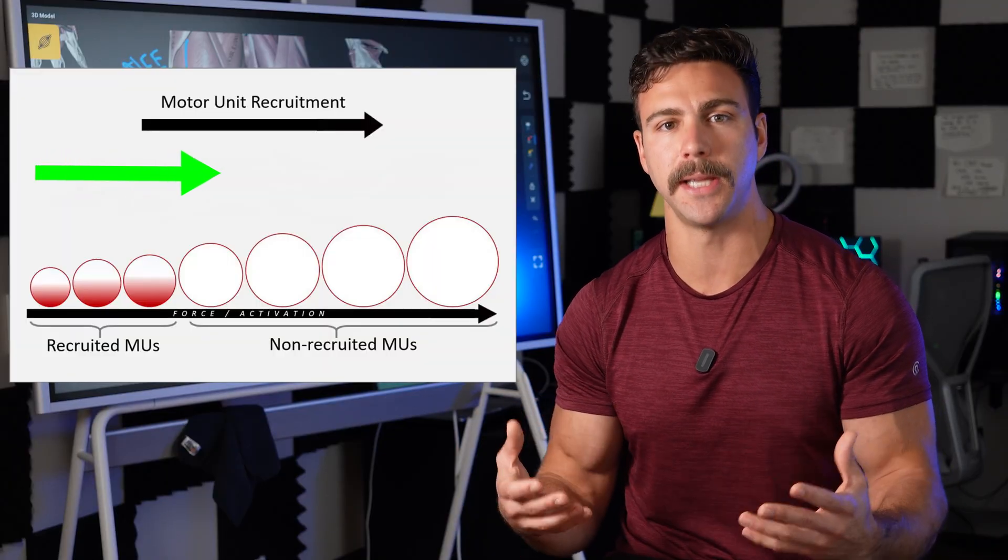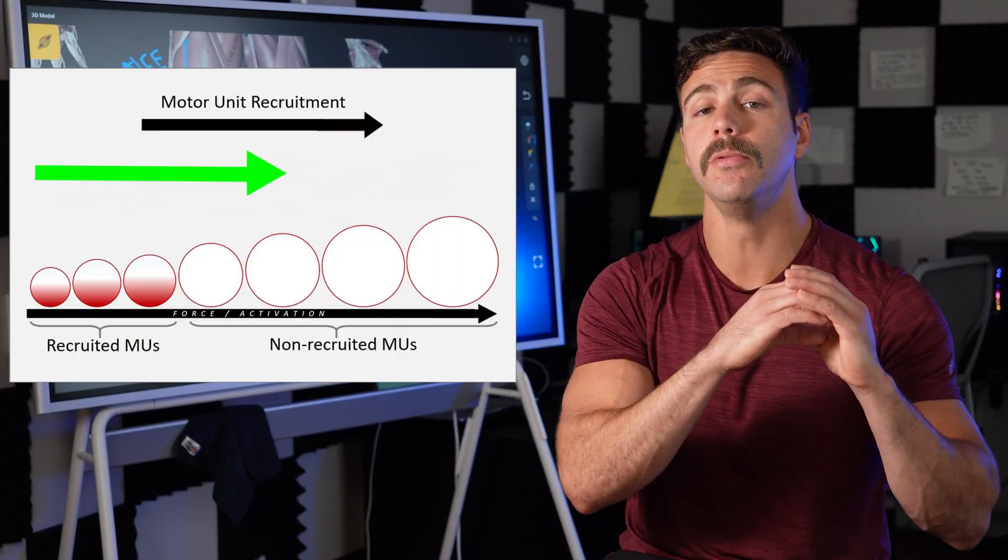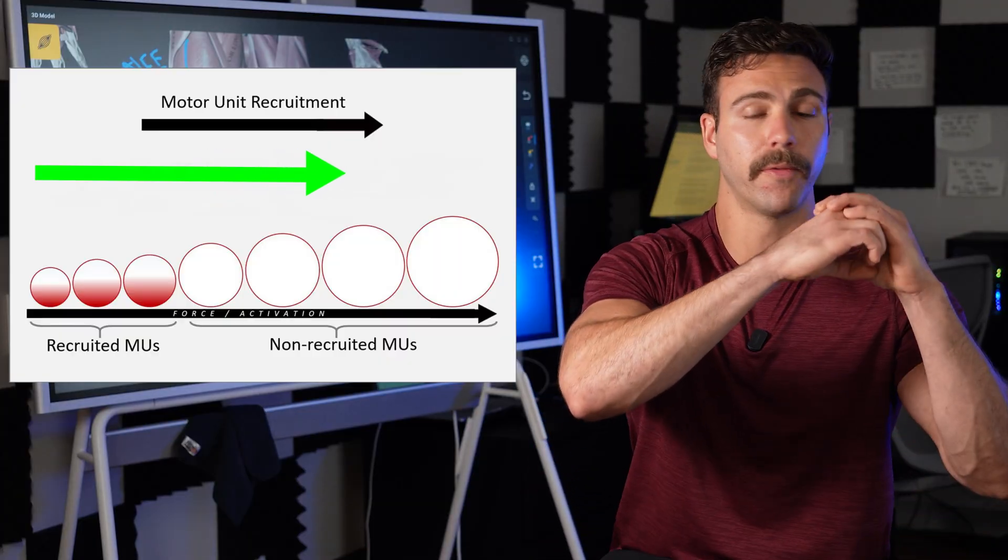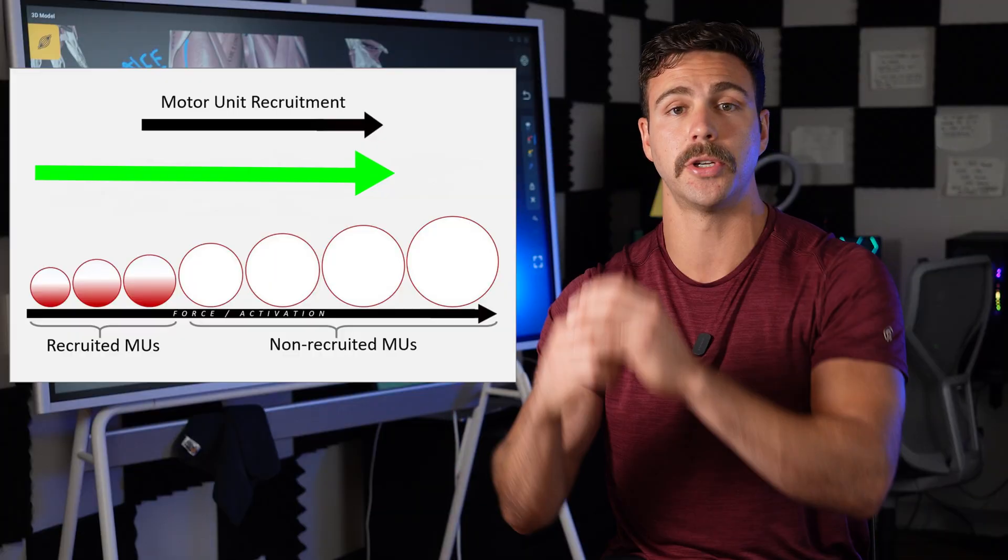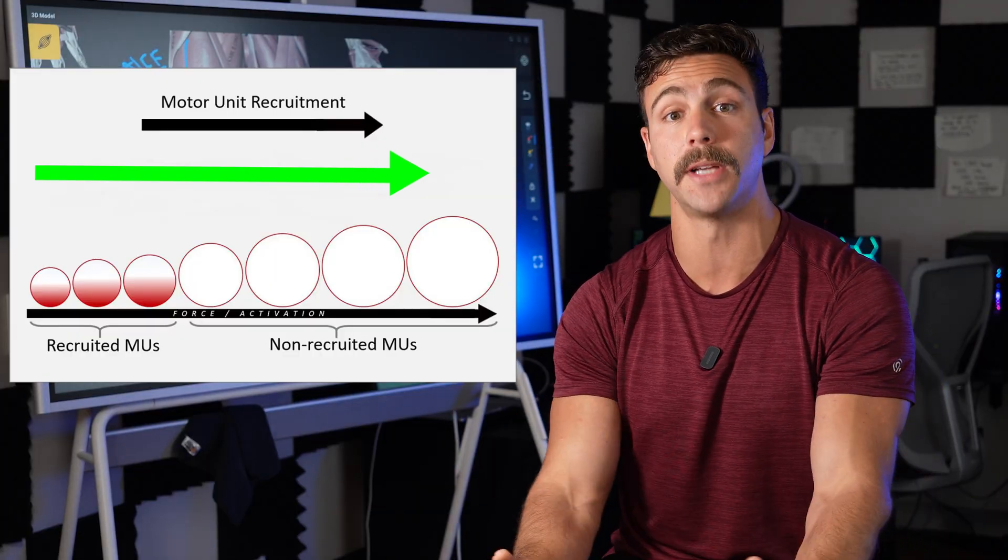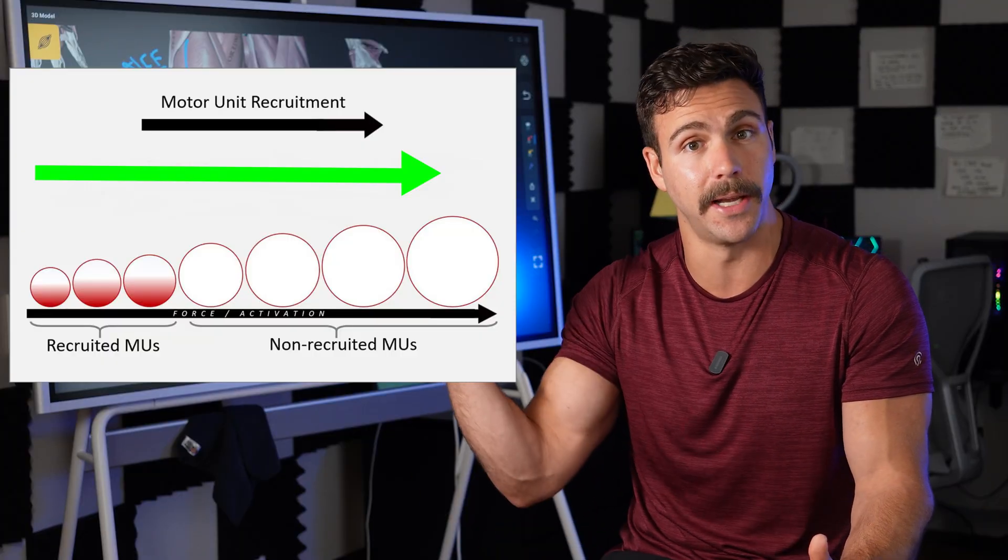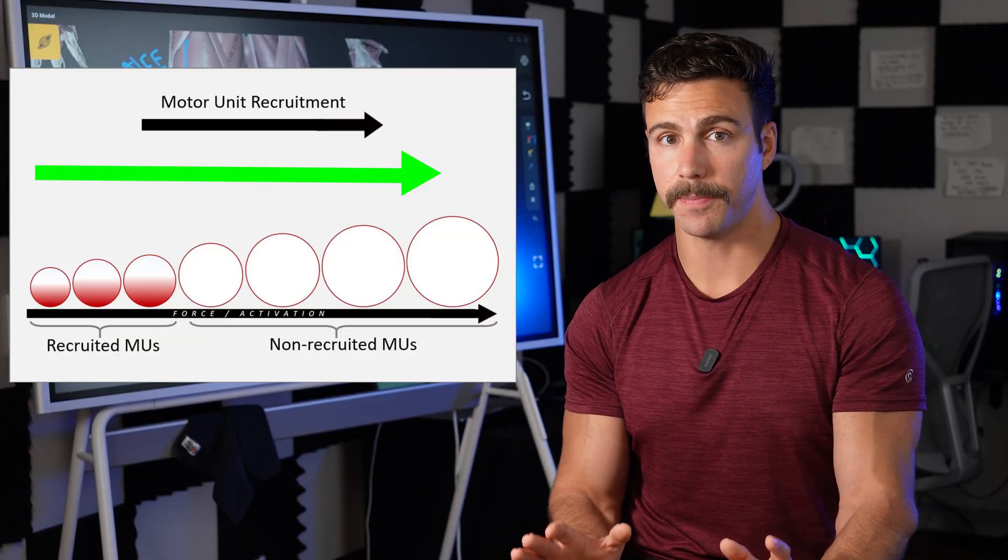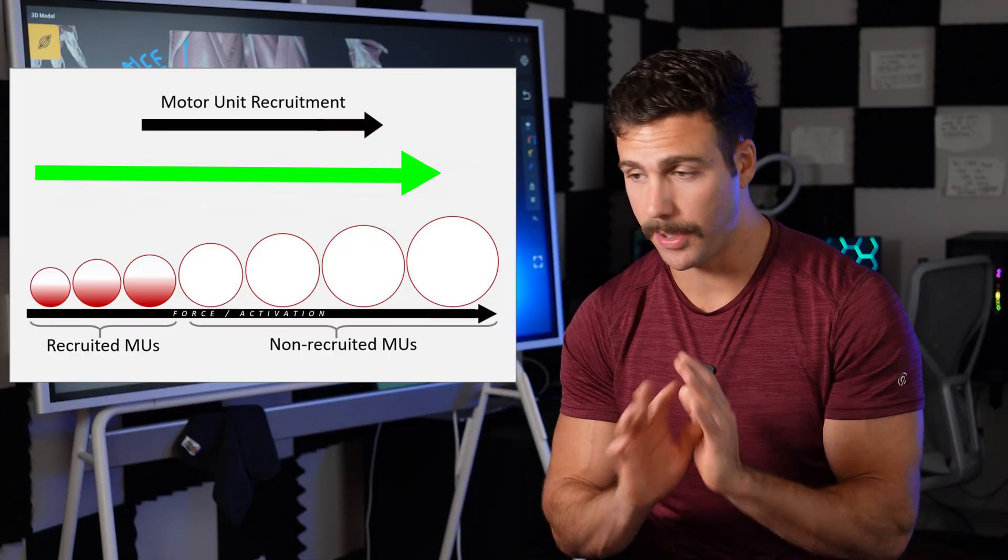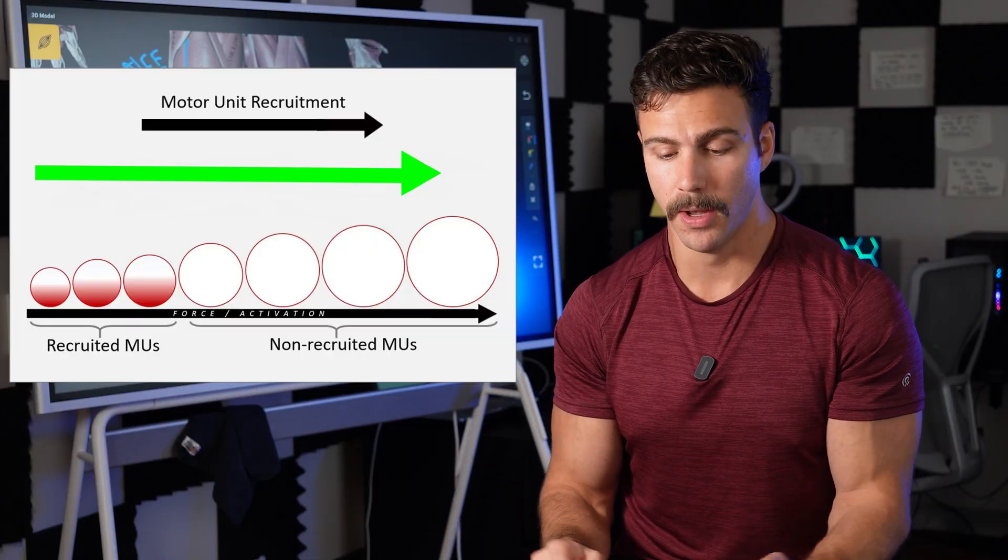And what this principle states is that we recruit motor units in order from smallest to largest based on the level of central motor command, which is basically the size of the electrical signal that is sent to the muscles. Stick with me here, this is the last bit of physiology, and then I promise it's all easy from here.